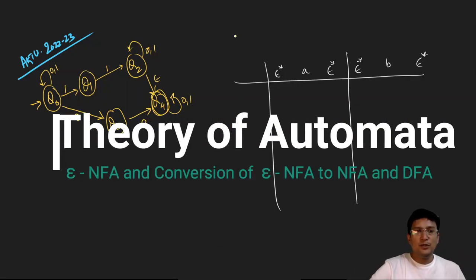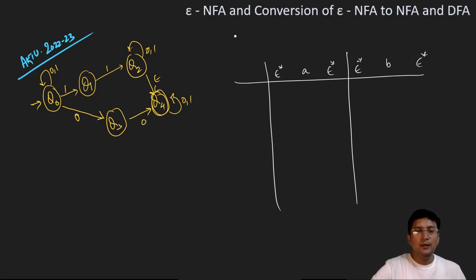Hello everyone, we will discuss one more question which has been asked in the AKTU examination 2022-23, wherein we have been given an Epsilon NFA and it has been asked to convert this Epsilon NFA to DFA. The steps we will follow are: first convert the Epsilon NFA to NFA, and then convert that to DFA. For the conversion of the Epsilon NFA to NFA, we need the Epsilon closure method.